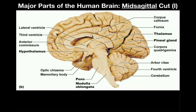Now let's look at some other parts of the brain. This part right here that looks lighter in color and surrounds this little hole is called the corpus callosum. The corpus callosum is actually a bunch of bundles of axons that connect the left and right hemispheres of the brain.